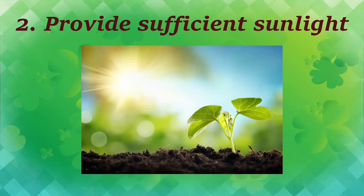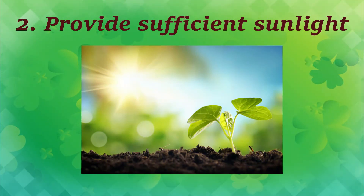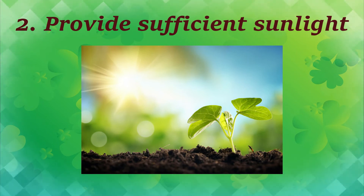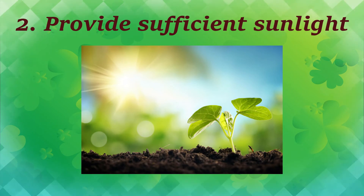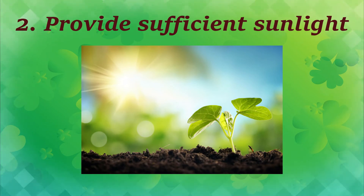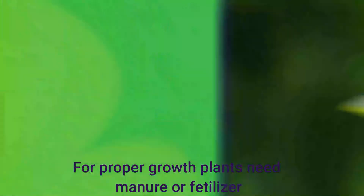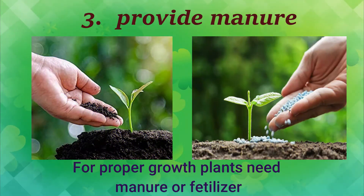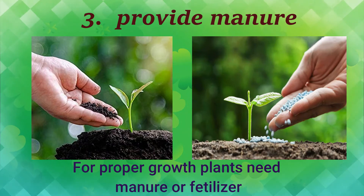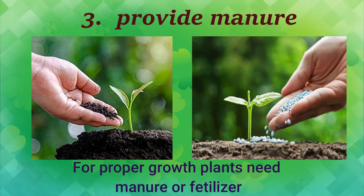The next care is to provide sunlight. Plants should get a sufficient amount of sunlight, and we must keep plants in a place where they will receive enough. For proper growth, plants also need manure or fertilizer, which we must provide in the proper amount at the proper time.